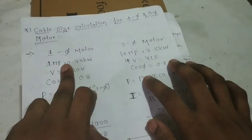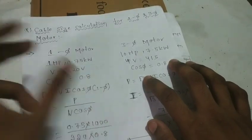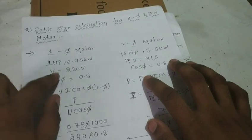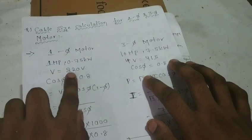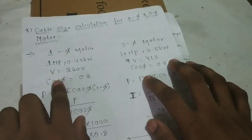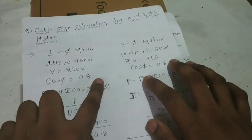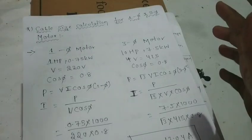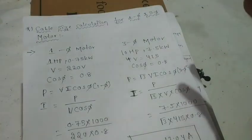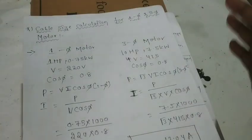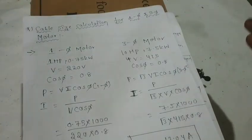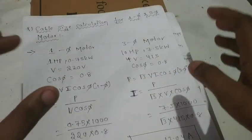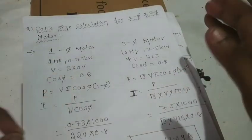The 1HP motor is 0.75kW. Voltage is 220V. The power factor cosφ is 0.8. We have to calculate using the formula P = V·I·cosφ. We have to calculate the current from this formula.